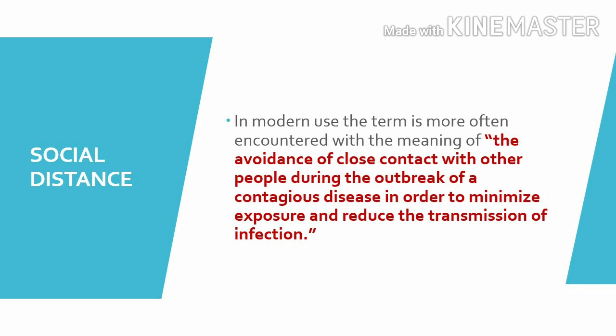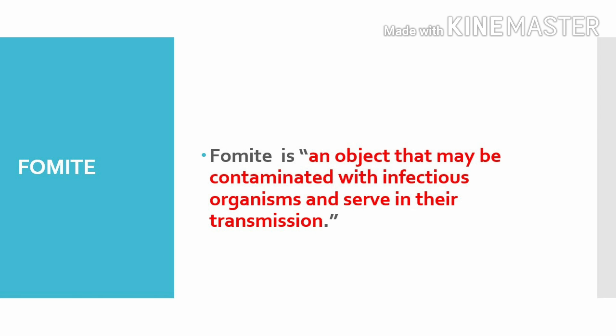Social distancing is the practice of reducing close contact between people to slow the spread of infections or diseases. Social distancing measures include limiting large gatherings, closing buildings, and canceling events. Examples include working from home instead of the office, connecting with family and friends virtually, closing schools or switching to online learning, and canceling or postponing conferences and large meetings.